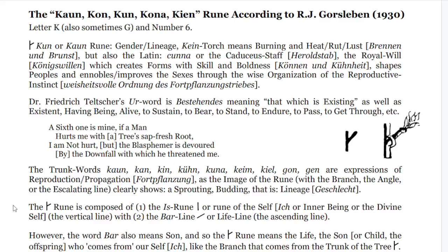Gorsleben, about five years after that, says it's the letter K, sometimes G, and number six. It means gender or lineage — sex in the context of a person's gender. The kind torch, burning, heat, lust, as well as the caduceus staff, the royal will, which creates forms with skill and boldness — to be bold, to be daring. It shapes, peoples, and ennobles, and improves the sexes through the wise organization of the reproductive instinct.